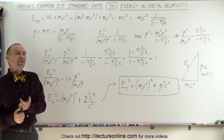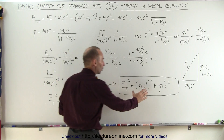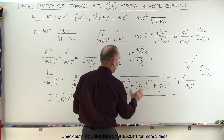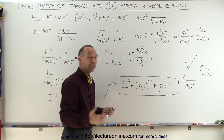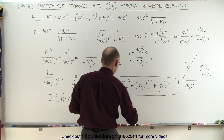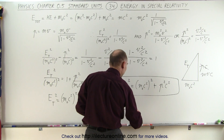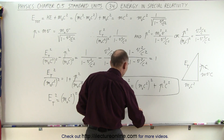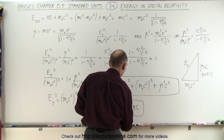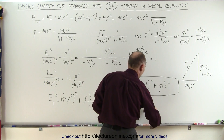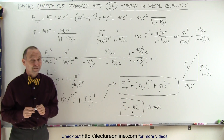What if we have a particle that doesn't have mass? Then the rest mass energy term goes to zero, and the total energy equals just the momentum times c. For example, for a photon that doesn't have mass, the total energy of the particle is simply equal to the momentum of the particle times c. That's for a particle with no mass.